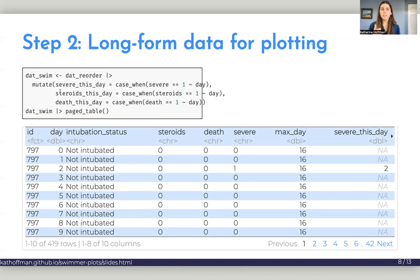So for our severity status, steroids, and death, we're going to do this case_when statement to make new status columns to be able to show on our ggplot. And so we can see what the data set looks like.